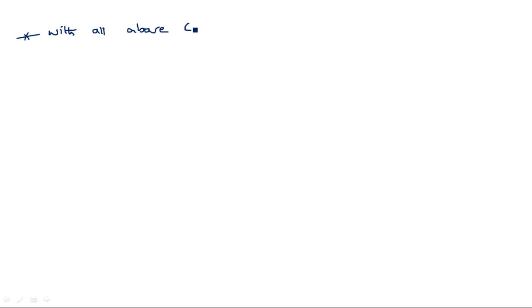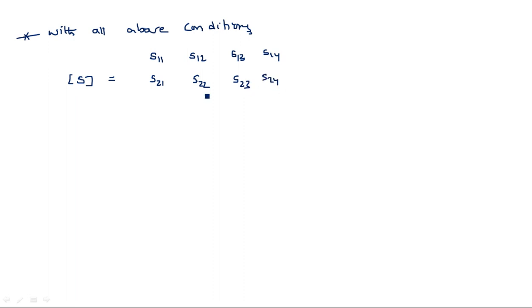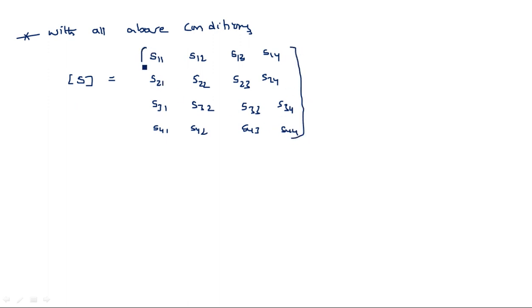With all the above conditions, the S-matrix S is a 4×4 matrix with 16 parameters: S₁₁, S₁₂, S₁₃, S₁₄, S₂₁, S₂₂, S₂₃, S₂₄, S₃₁, S₃₂, S₃₃, S₃₄, S₄₁, S₄₂, S₄₃, and S₄₄.